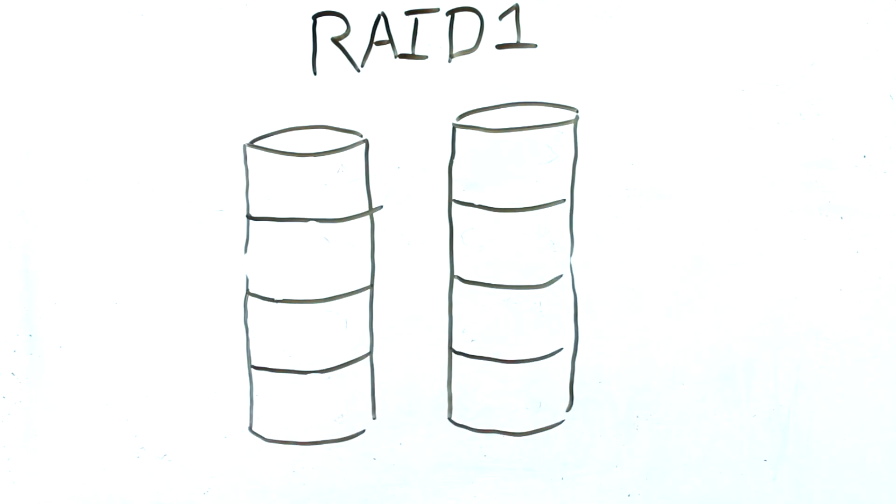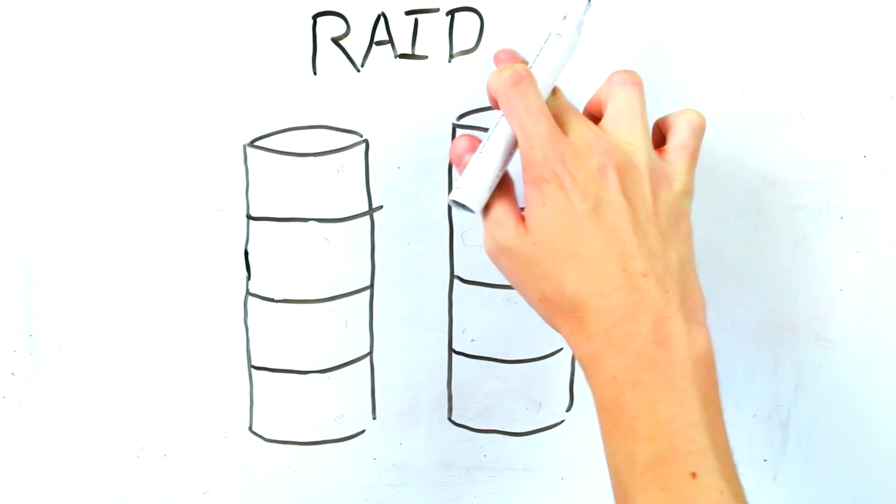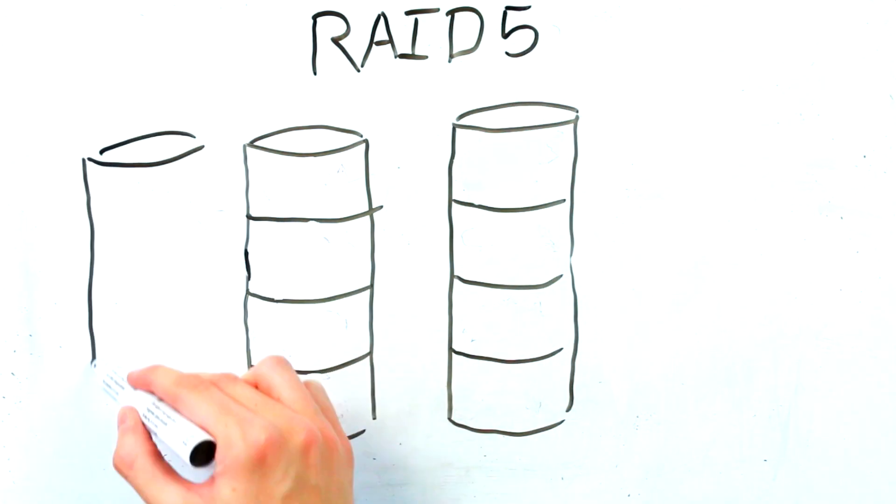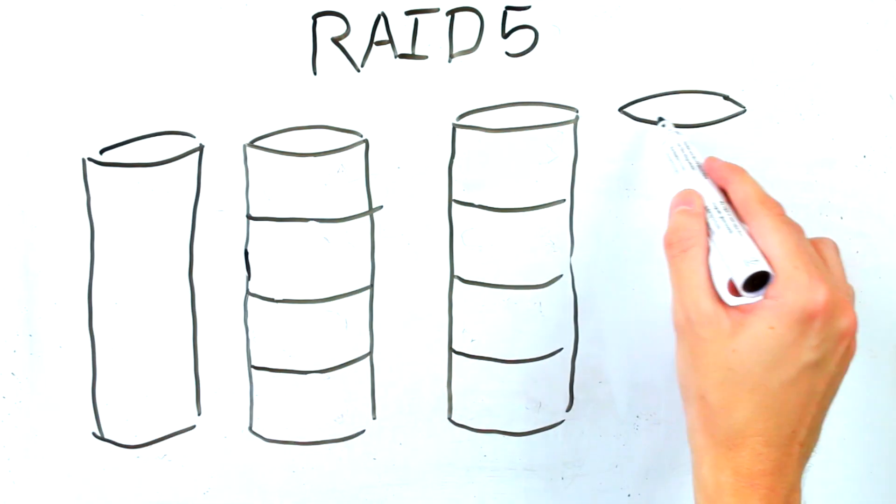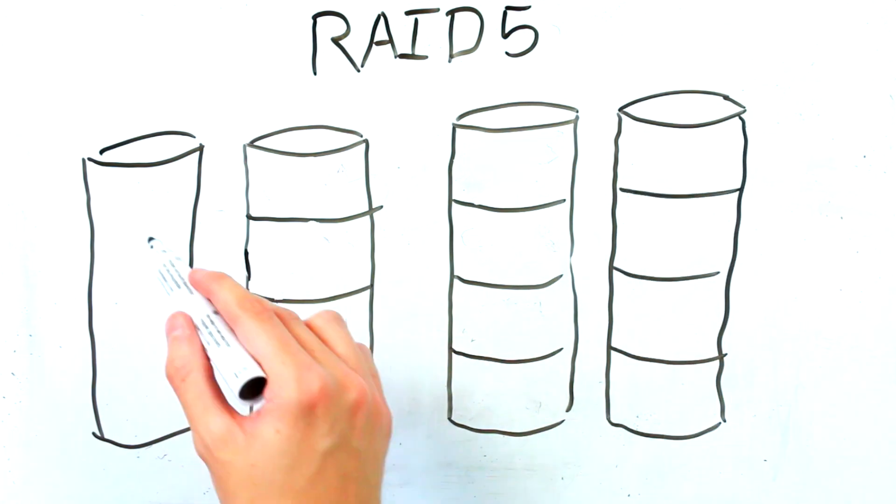The next RAID option is RAID 5 which both improves reliability and performance. It works with any NVR or NAS that has three or more hard drives. So how does it work?